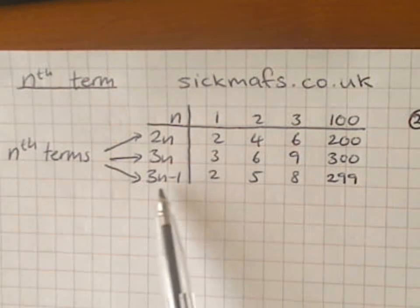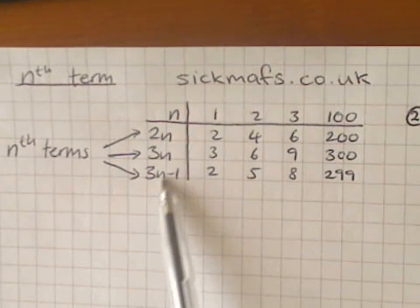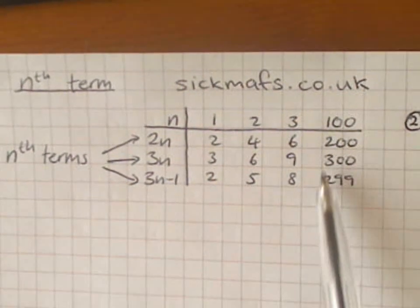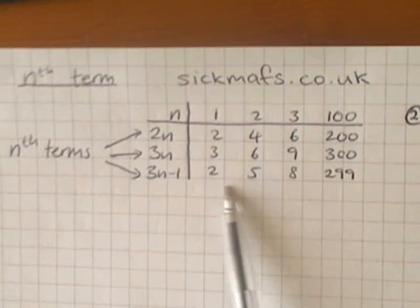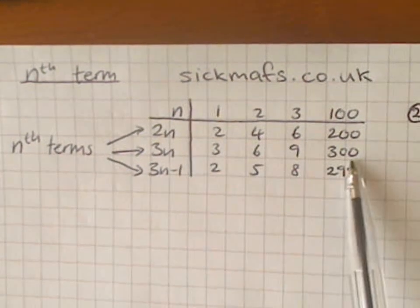And so, once you've got this rule, you say, I want to know the hundredth number. So, you put a hundred in there. You go, three times a hundred minus one is two hundred and ninety-nine. I've worked out the hundredth number in this pattern. I've worked out the nth term and the hundredth term.